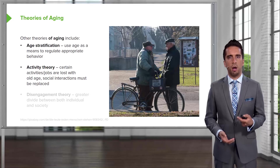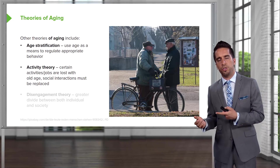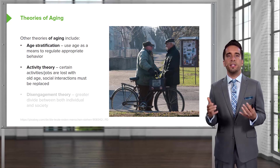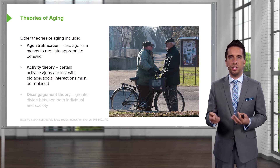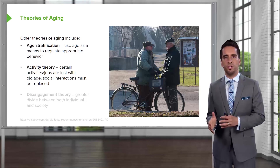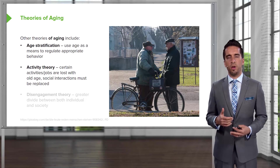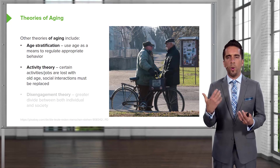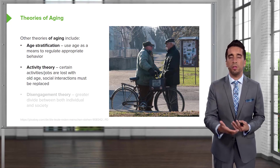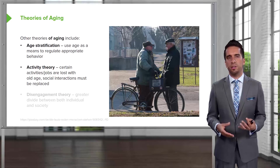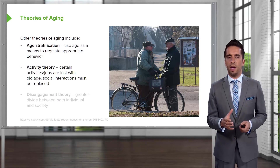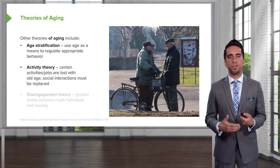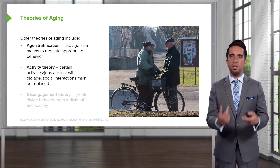Activity theory holds that certain activities and jobs are lost with old age and social interactions must replace them. If you're forced to retire or can no longer do physical labor due to arthritis or poor vision, you can no longer do those jobs. But it's stated that you need to replace that with other roles. Going to work every day and engaging with others is extremely important. If you retire and just watch TV all day, you've lost a huge portion of your life. That needs to be replaced with socializing with friends, family, other elders, taking up hobbies, and staying mentally engaged.